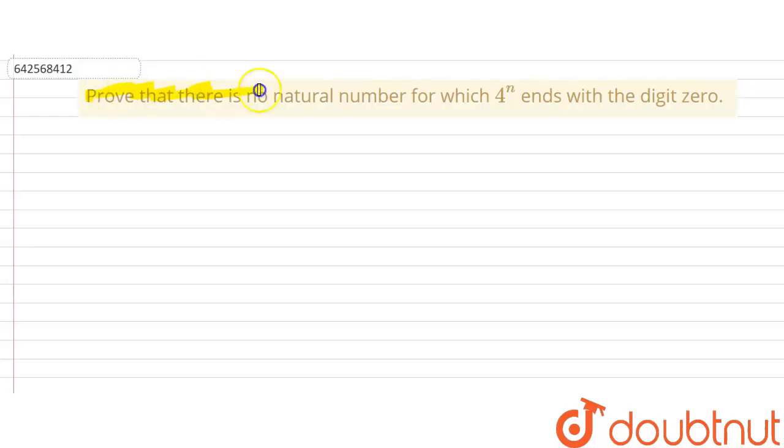Prove that there is no natural number for which 4 to the power n ends with digit zero. So let's solve this question. It is given that 4^n ends with digit zero. We need to prove there is no natural number for which 4^n ends with digit zero.